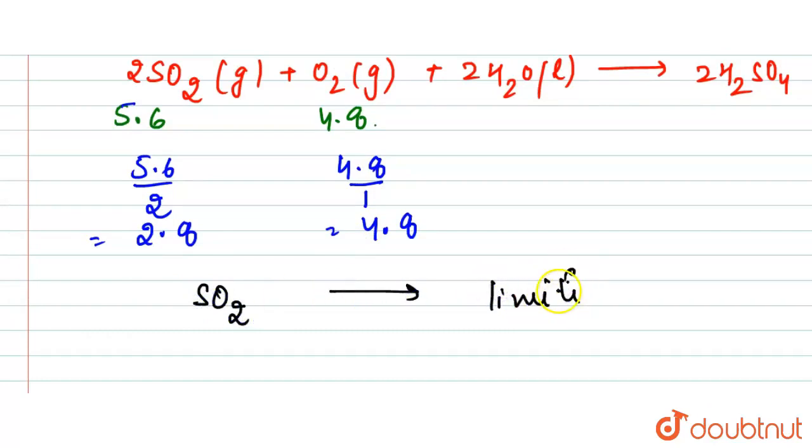SO2 is the limiting reagent. Limiting reagents are those which are completely used in the reaction first and they decide the amount of reactant reacted and the amount of product formed. So here these moles of SO2 will decide the amount of moles of H2SO4 formed.